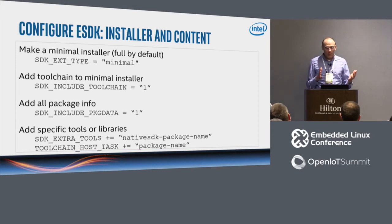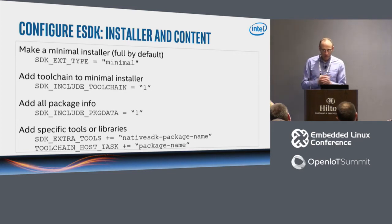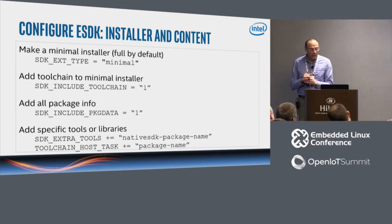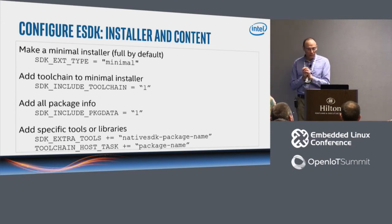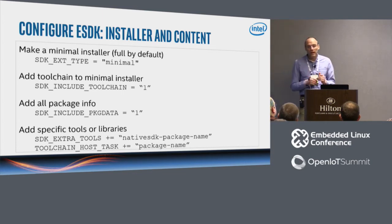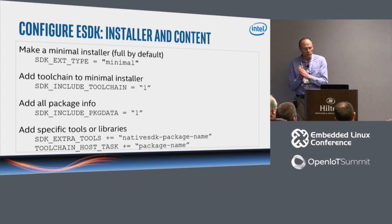To customize: by default you get the full installer, which will be gigabytes of data. If you want to give your app developers the small installer, you just set SDK_EXT_TYPE to minimal in your local.conf, and now you'll have a small installer. You can also add a toolchain to the installer — obviously it'll make it quite a lot larger than 35 megabytes — just a simple one-liner in your local.conf: SDK_INCLUDES_TOOLCHAIN.